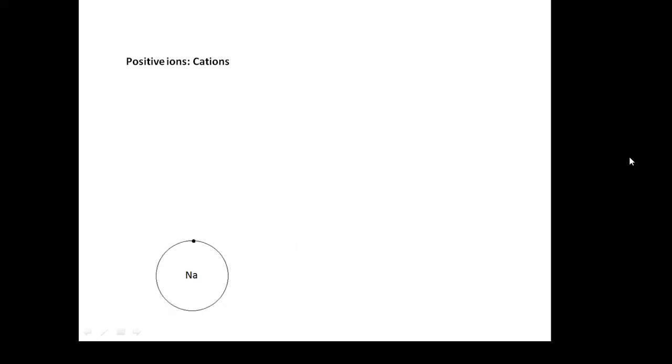Positive ions are called cations. If it becomes a positive ion, it's called a cation. Here's a sodium atom, and I've drawn the electron in its outer shell as a dot. We'll see what happens to that in a minute.